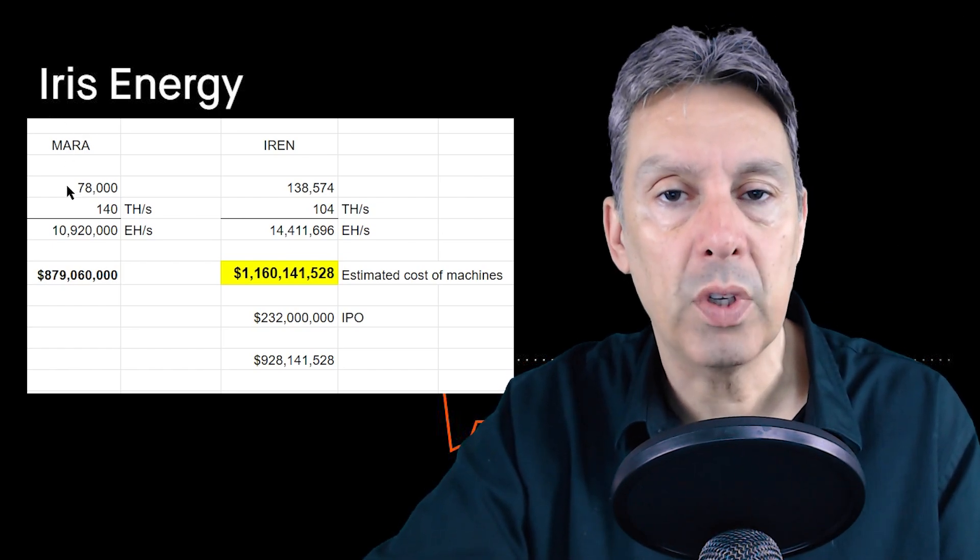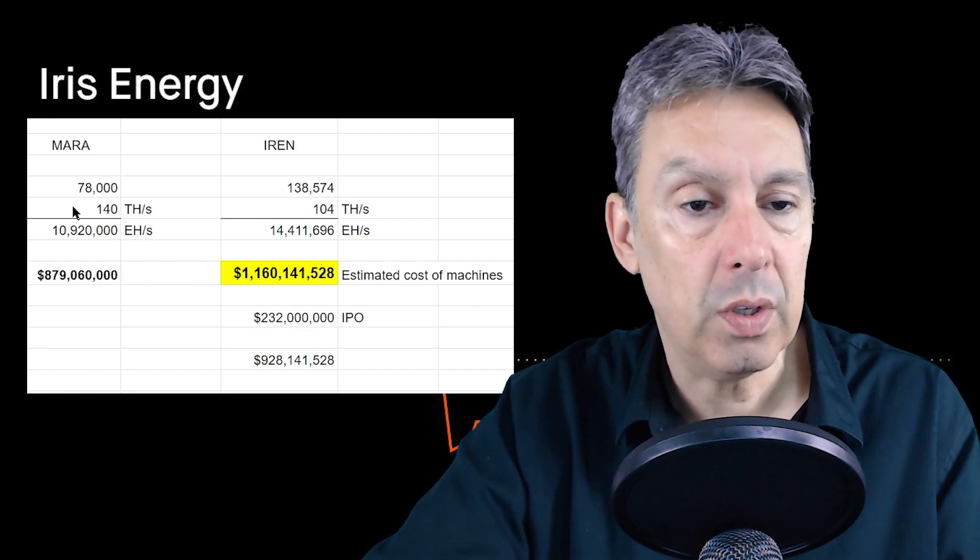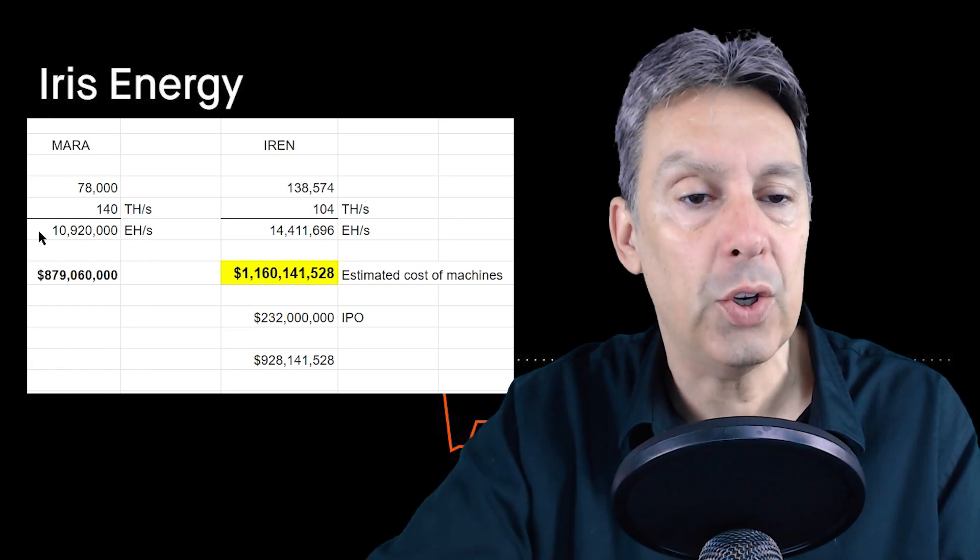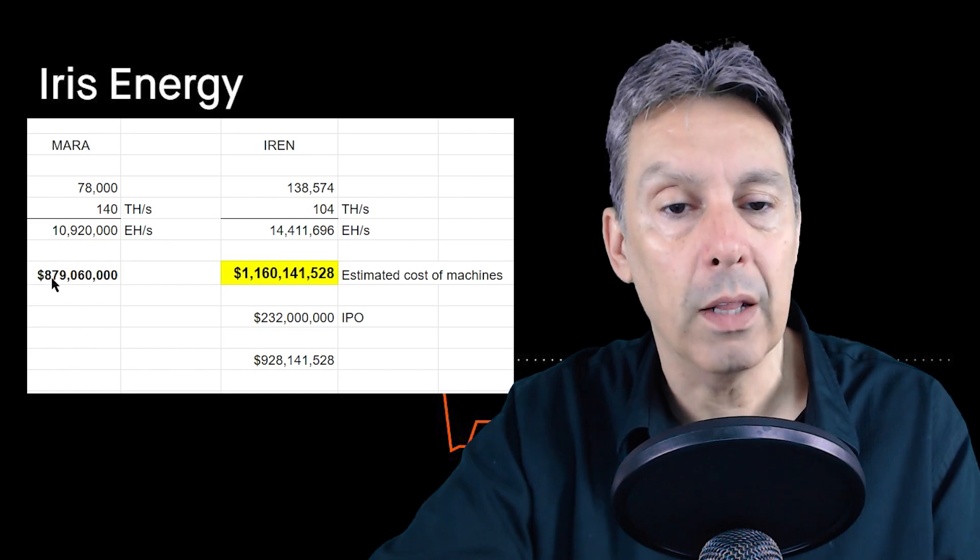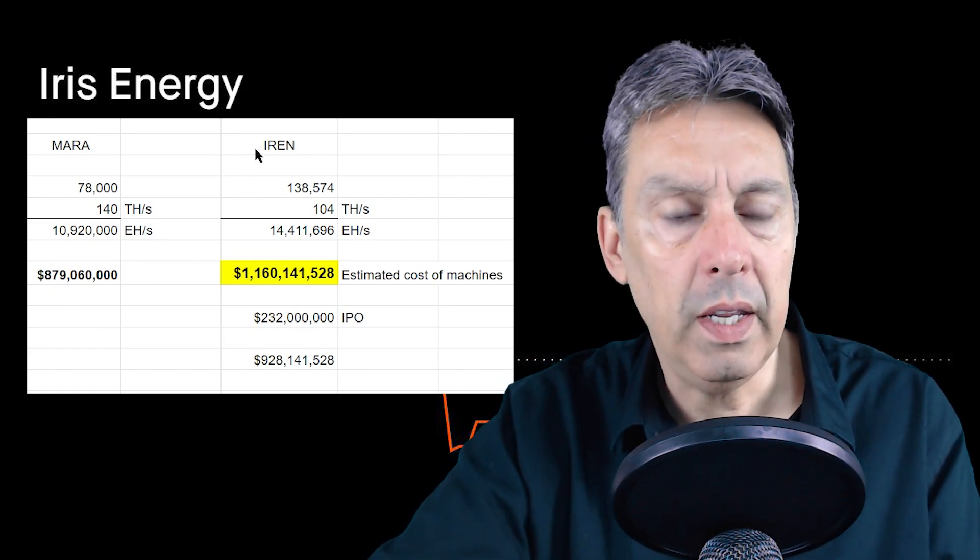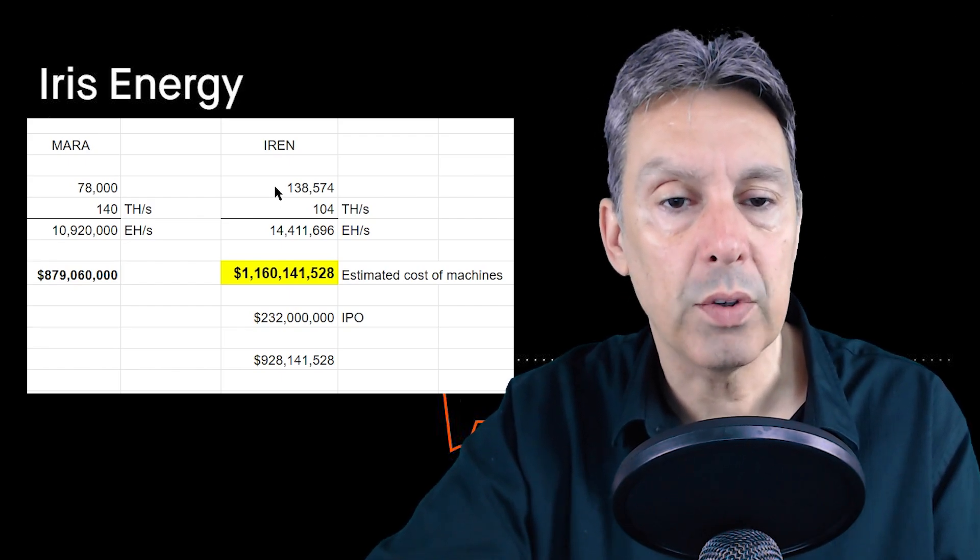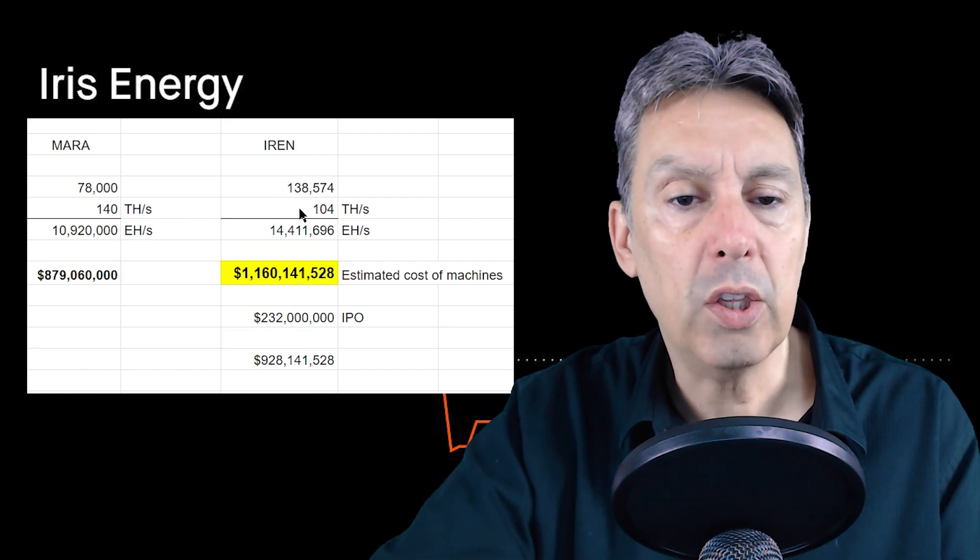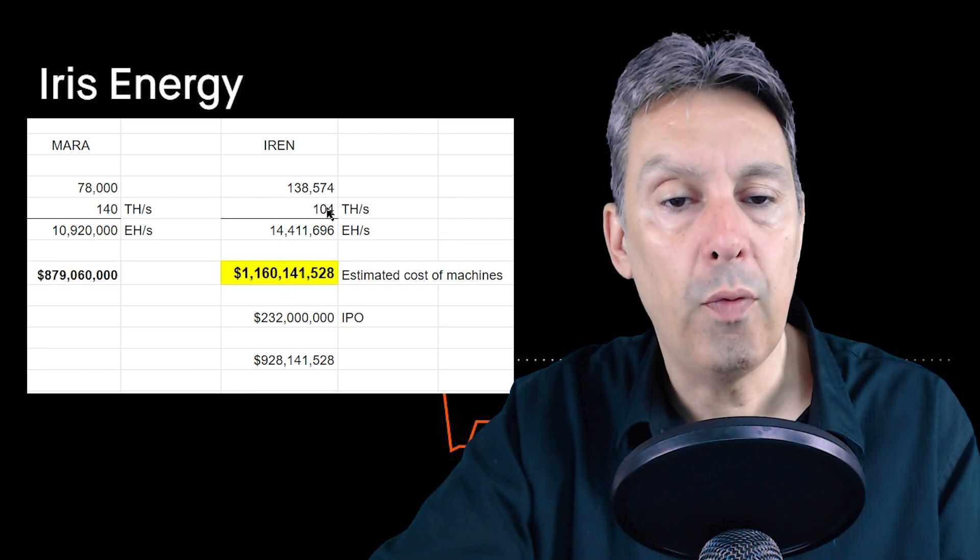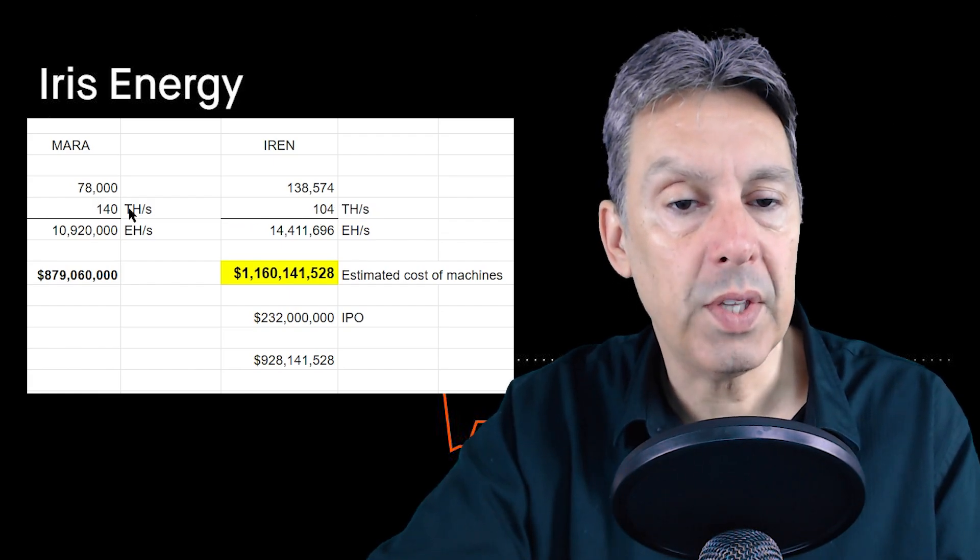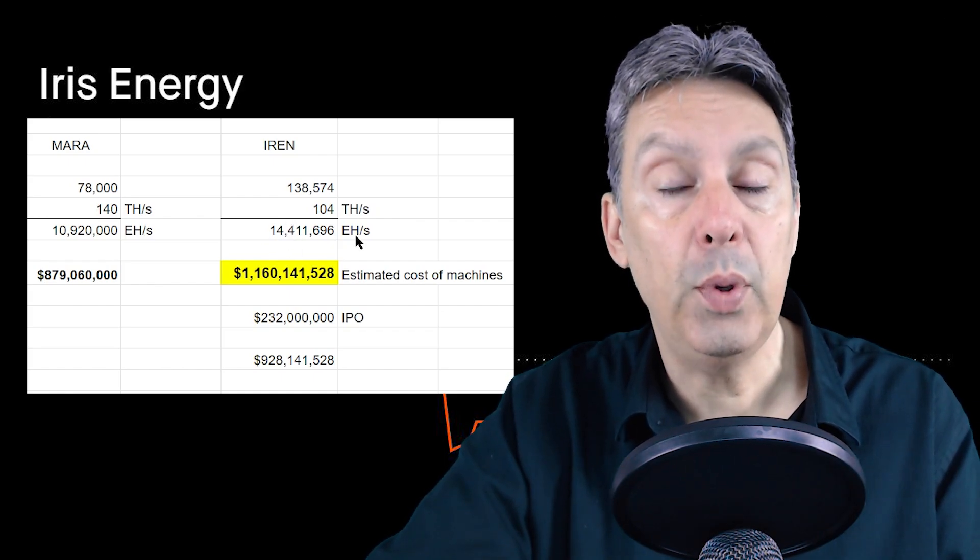That equates to about 10.9 exahash in machine power, and they paid $879 million for those. So what I've done is for Iris, they still need to buy 138,574 machines. It looks like they're buying the S19J Pros. I believe those have 104 terahash per second versus the 140s that Marathon bought. So that is going to give them an additional 14.4 exahash of computing power along with their three quarters of an exahash. That gets them to their 15.2 exahash.